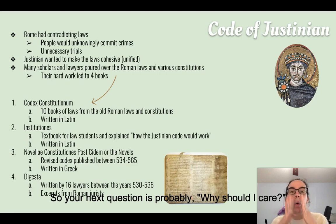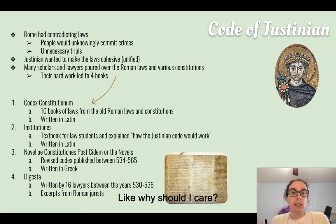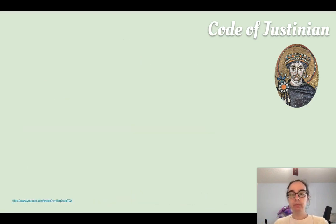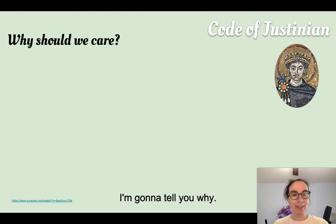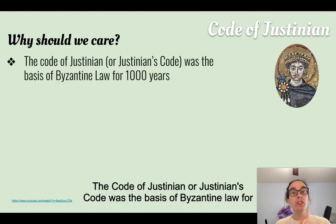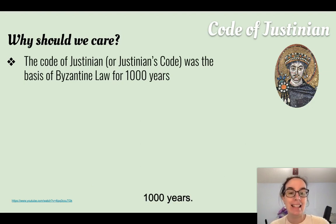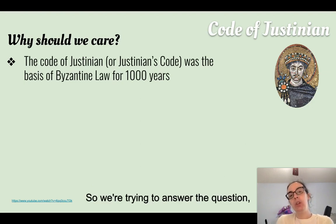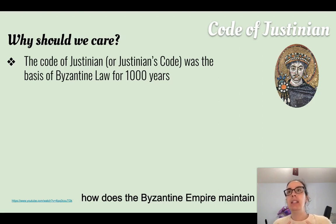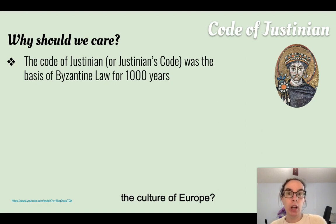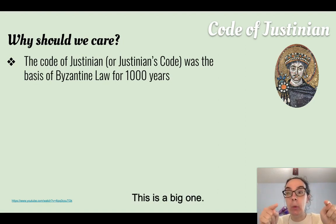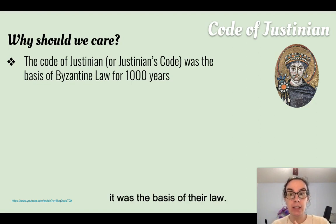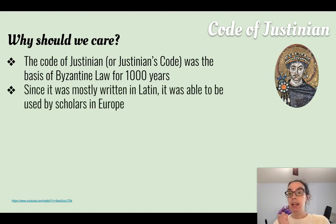Why should you care? The Code of Justinian was the basis of Byzantine law for a thousand years. So if we're trying to answer the question of how the Byzantine Empire maintained the culture of Europe, this is a big one — for a thousand years it was the basis of their law.